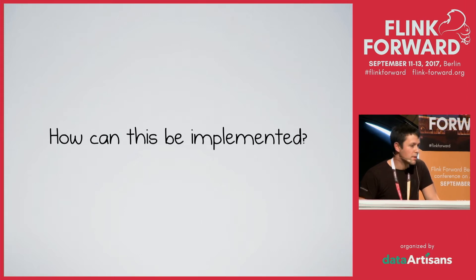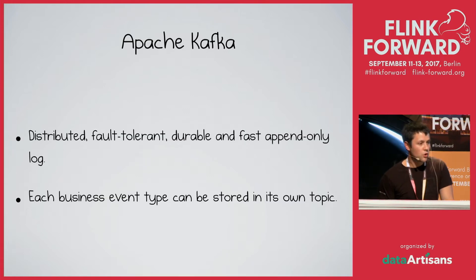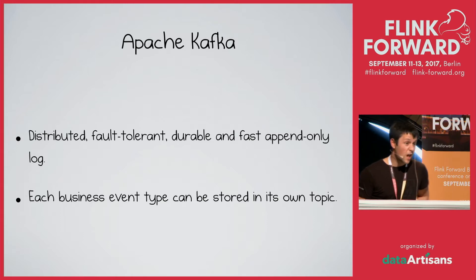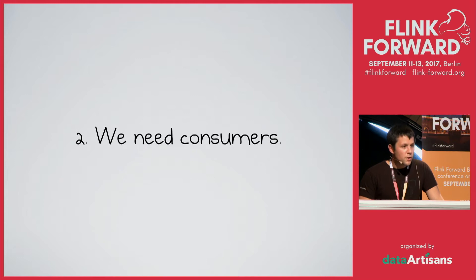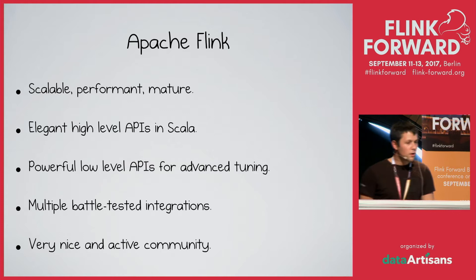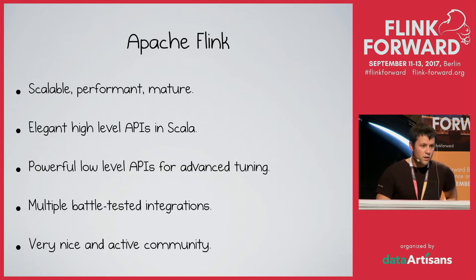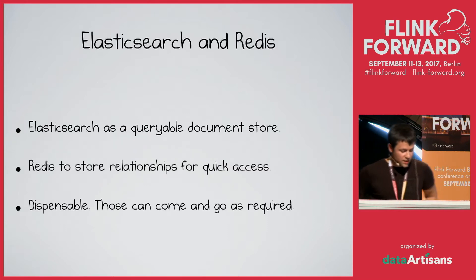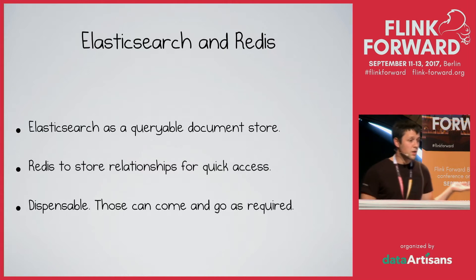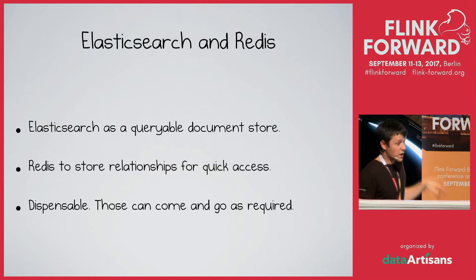How can we implement something like this? First, we need a log, and Kafka is the obvious choice — it's stable, distributed, fault-tolerant, durable, quite fast, well understood, with integrations and community support. We can store each business event in its own topic in Kafka. Then we need consumers, and for that we have Flink — it's scalable, performant, mature, with really elegant high-level APIs in Scala, powerful low-level APIs for advanced tuning, multiple battle-tested integrations, and an active community. As a serving layer, in our case it's Elasticsearch and Redis. Elasticsearch is used as a queryable document store, and Redis is used to store relations for quick access. But really that's the least important bit of the architecture, because we can completely wipe it off, start with Cassandra for example if we realize that's the best way to architect our system, replay the log, and have a new serving layer.